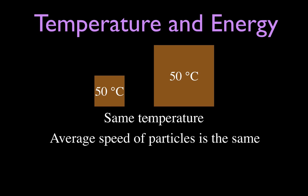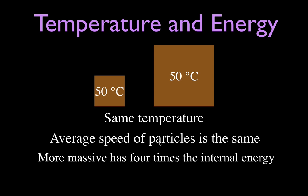Temperature is a measure of the average kinetic energy. So, the average speed is the same. But, the more massive object, the bigger one over here, has four times as much energy or four times as much internal energy. Simply because it's four times as big and has four times as much stuff. So it has four times as much translational or potential or kinetic energy. That's kind of the difference between temperature and energy.